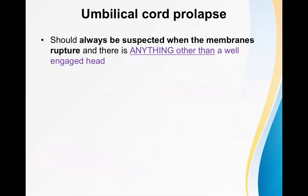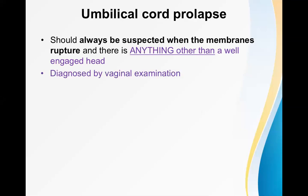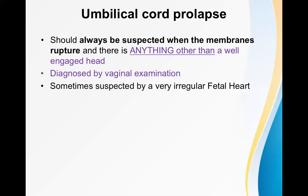Umbilical cord prolapse should always be suspected when the membranes rupture and there is anything other than a well-engaged head you can feel. If there is a gap between the head and the cervical rim, other structures like the umbilical cord can easily come down. It should be diagnosed by vaginal examination, and sometimes it is suspected by a very irregular fetal heart rate — either bradycardia or tachycardia.